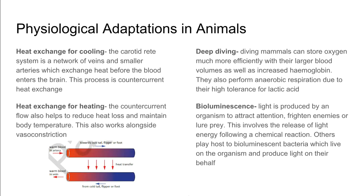A heat exchange process takes place for both cooling and heating. A system of networks of veins and arteries enables heat to be lost from blood before it enters the brain, which is important for preventing overheating. If heating is required, there is a counter-current flow that helps reduce heat loss and maintain body temperature — this can occur in tails, flippers, or feet.